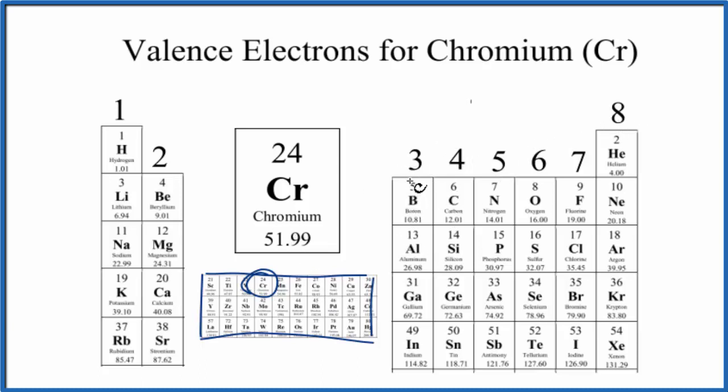Then we have group 13 through 18, each one of these groups, group 13, 3, 4, 5, 6, 7, group 18 has 8 valence electrons.